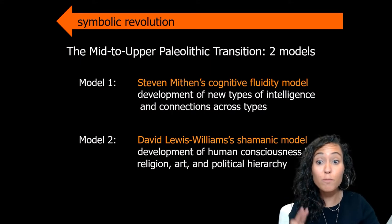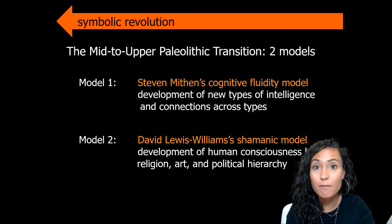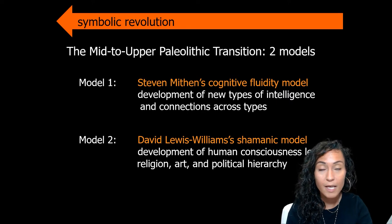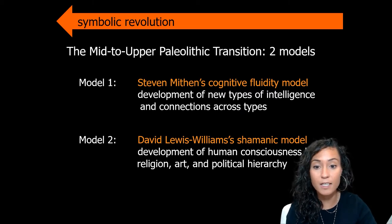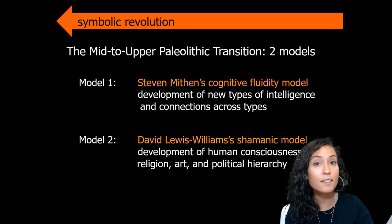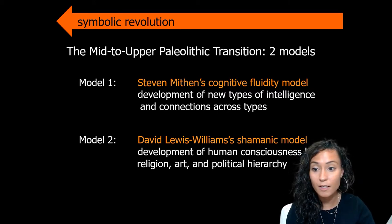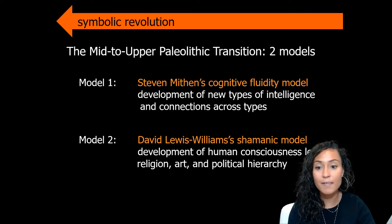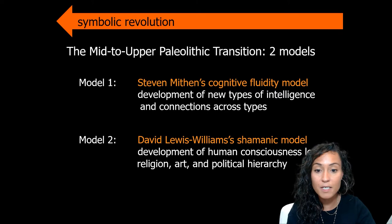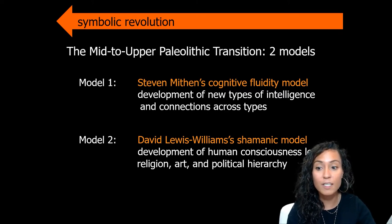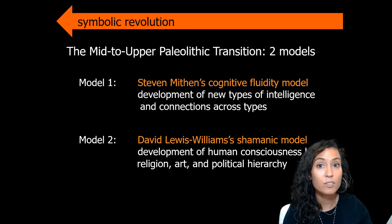Let's return to our two models for the development of behaviorally modern humans. As we talked about in Lecture 2.2, Stephen Mithen argued that the development of new types of intelligence and connections across these types of intelligence is what led to the symbolic revolution. Today, we'll dive into David Lewis-Williams' shamanic model, which suggests that the development of human consciousness is what led directly to religion, art, and social hierarchy.